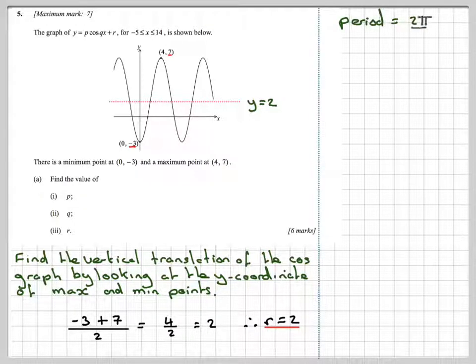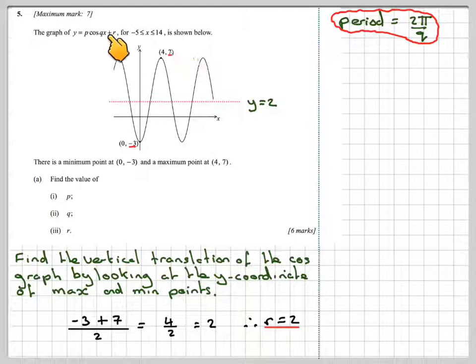We also know the period of a graph is 2π over q. Normally it's b, but this time it's written as q. So the period of a cosine graph is 2π divided by q.